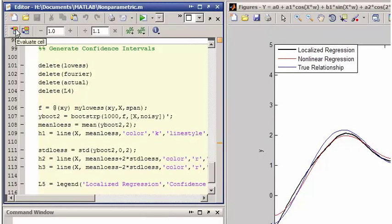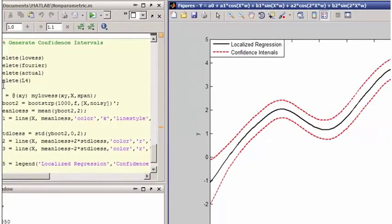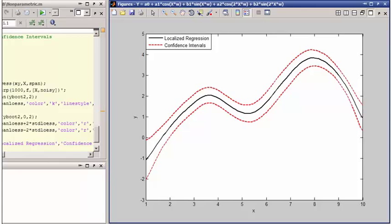In many cases, you aren't just interested in estimating the relationship between x and y. You also want to generate confidence intervals to show how certain you are about the location of the curve. Here, a related technique called bootstrap is used to approximate confidence intervals for the nonparametric fit.